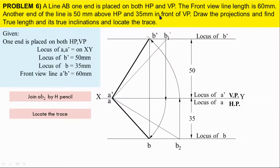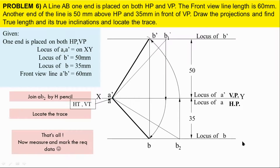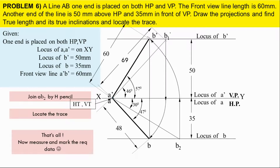Locate the trace. Extend line AB toward XY — this trace will be on XY itself. Mark the front view line angle, top view line angle. Mark the front view line length, true line length, top view length, and true line length. Mark the details and the point.